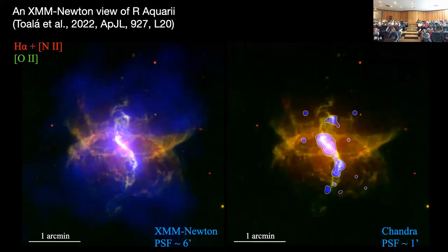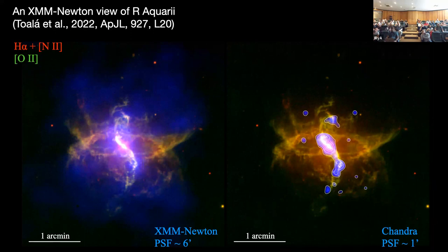This is a comparison with the Chandra detection. Chandra filters out the extended emission and we can only see the densest regions. This difference was planned by design between XMM and Chandra. Chandra has a resolution of one arcsecond, and XMM is about six arcseconds, but it has a higher effective area to detect soft X-ray photons. Both observations are complementary.